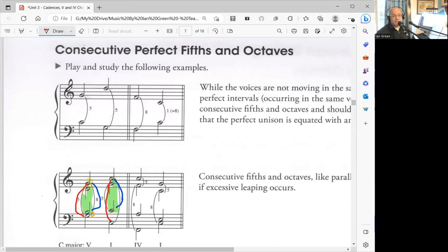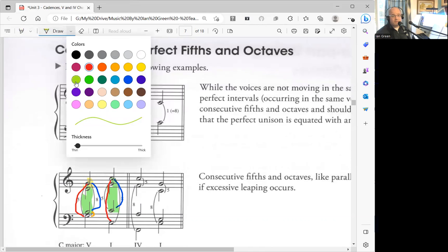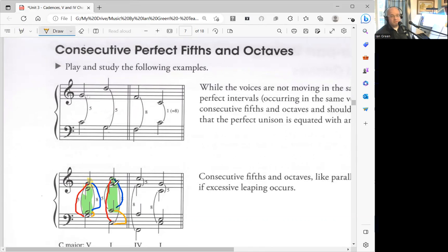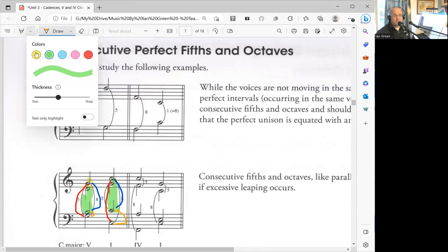Now what we can do is check tenor to bass. So we'll switch the color here, and we go from a third to an octave. B to G is a third, C to C is an octave. So now you can see, and we also want to do the last one, which is soprano to alto, fourth to fourth. D to G is a fourth, G to C is a fourth.